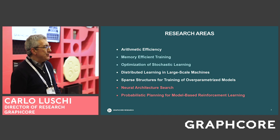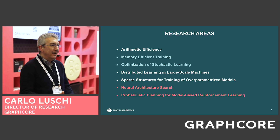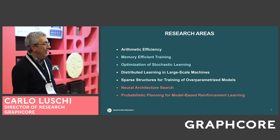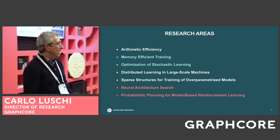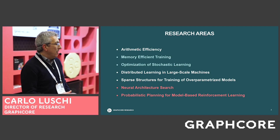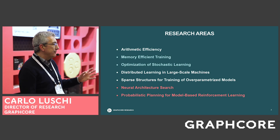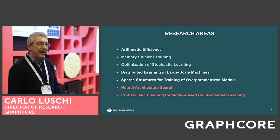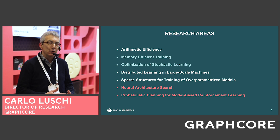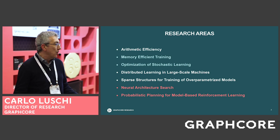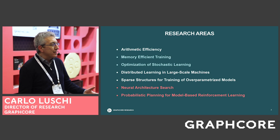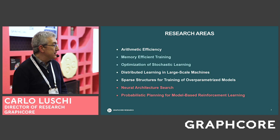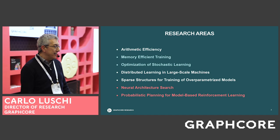The first part is related to arithmetic efficiency — the low precision numerical formats that make computation in machine intelligence effective in terms of speed and memory requirements. Then memory efficient training: how to do backpropagation consuming less memory. Optimization of stochastic learning is fundamental in machine intelligence, so we dedicate a special effort to understanding the crucial aspects of statistical learning. Distributed training is becoming essential to speed up training by distributing processing over parallel workers and training larger and larger models, which has recently proved extremely effective. It's also important to identify sparse structures that can speed up training, and we briefly address neural architecture search and probabilistic planning.